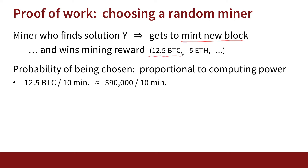In Bitcoin, the mining reward is 12.5 Bitcoin. In Ethereum, the mining reward is 5 ethers, and so on. Generally in a proof of work system, the miner who finds the solution makes a lot of money. The probability of finding the solution is proportional to how much computing power you have. If you have enough computing power to always find the solution before everybody else, you'll earn 12.5 Bitcoins every 10 minutes — which today translates to around $90,000 every 10 minutes.